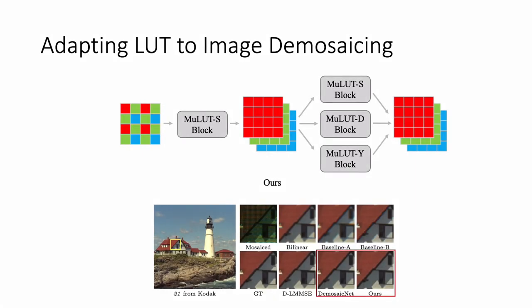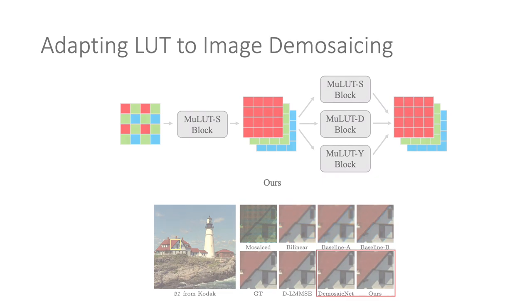In contrast, MuLUT addresses the above obstacles with a multi-stage and multi-branch structure, achieving similar visual quality as DNN methods but at high efficiency.